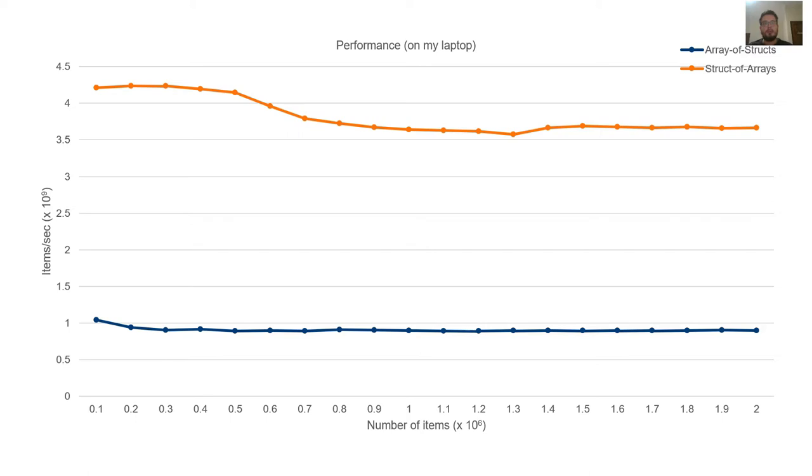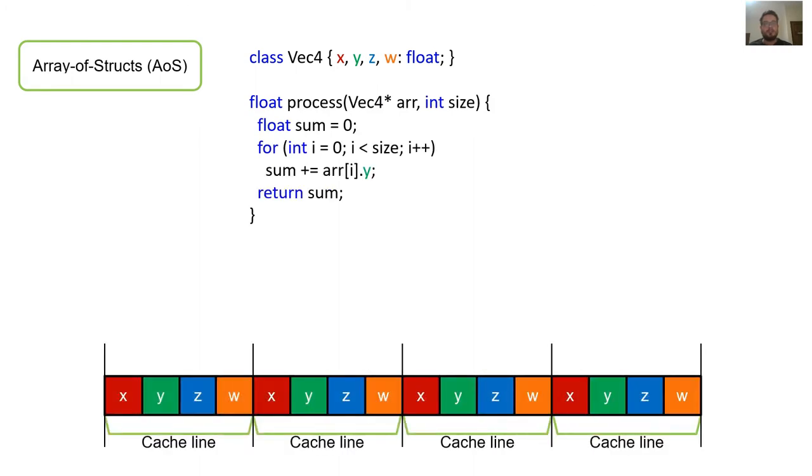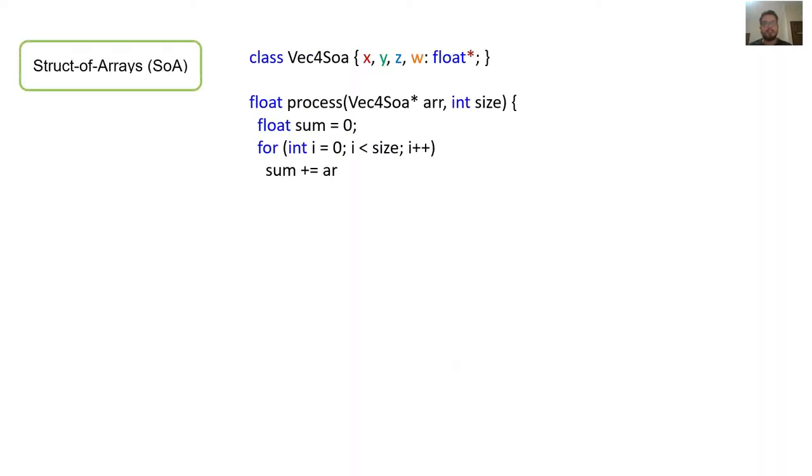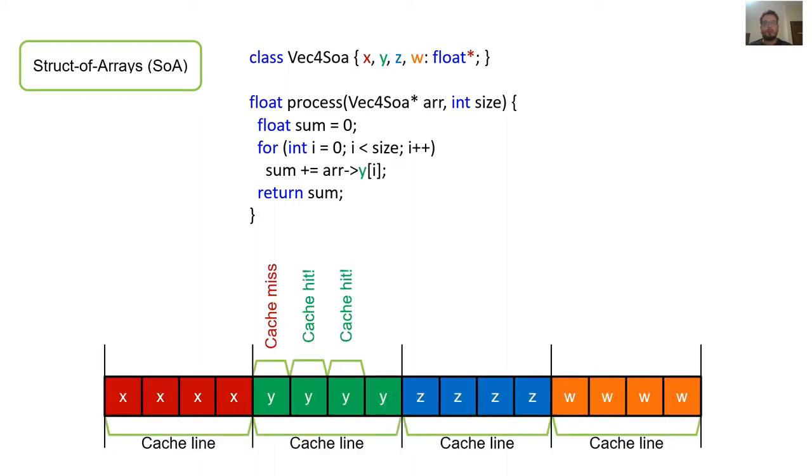The difference in performance has to do with the difference in memory access patterns. In the case of array of structs, whenever we fetch the y-coordinate of a vec4 element, we cause a cache miss. On the other hand, in the case of struct of arrays, because the y-coordinates are grouped together, we cause a cache miss once every four y-coordinate fetches.